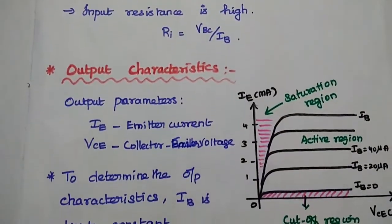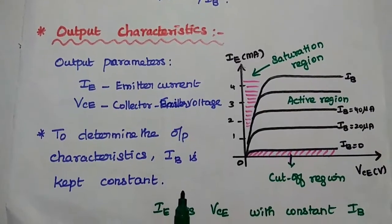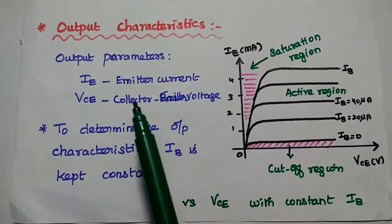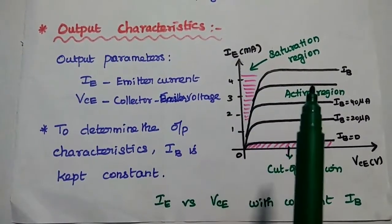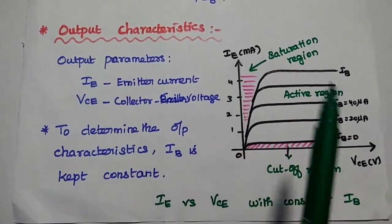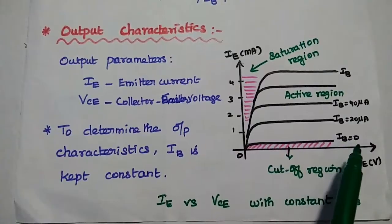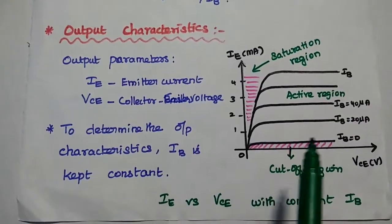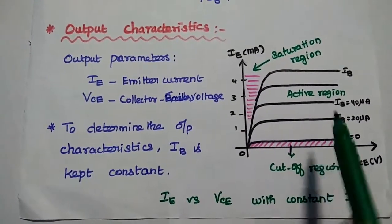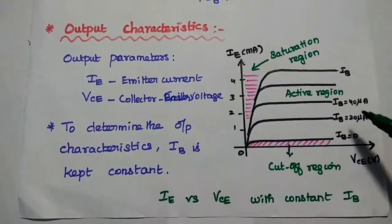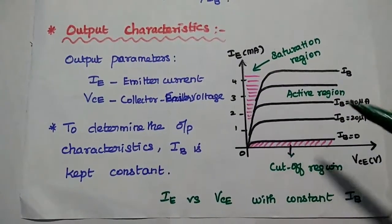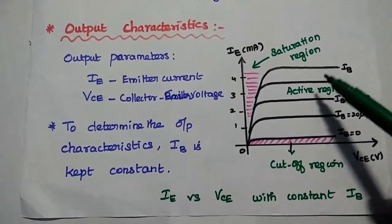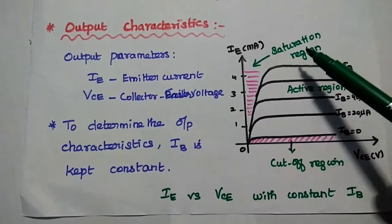For the output characteristics of common collector configuration, we relate the output parameters: emitter current and collector-emitter voltage. This is the graph of IE versus VCE at a constant base current. To determine the output characteristics, the input current is kept constant by adjusting the input voltage, and for each IB value, we relate IE and VCE. In this output characteristics, there are three regions: active region, cutoff region, and saturation region.